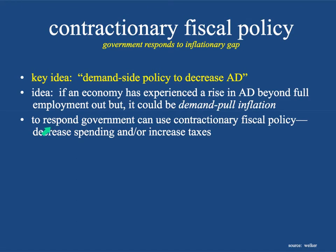So the government is going to respond by using contractionary fiscal policy, which is to decrease spending — decrease the G factor, the government spending factor — and/or increase taxes, which is going to lead to a drop in consumption because people have less money in their pockets.